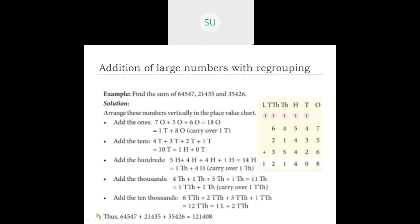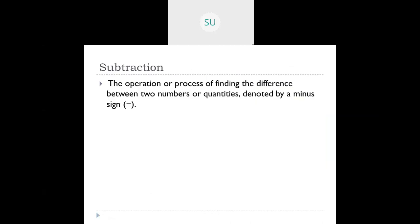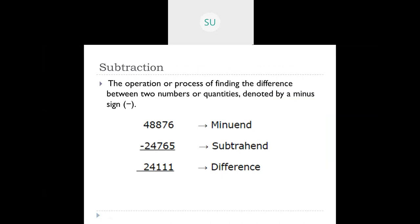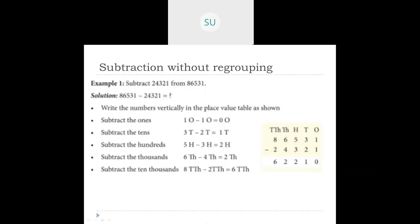So this is how you do regrouping — you regroup ones as tens, or tens as hundreds, and carry it over to the respective next place. Then we saw subtraction. Subtraction is the operation of finding the difference between two numbers, denoted by a minus sign. The larger number is called the minuend, the smaller number is called the subtrahend, and the answer is called the difference.